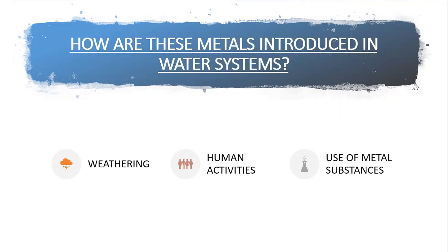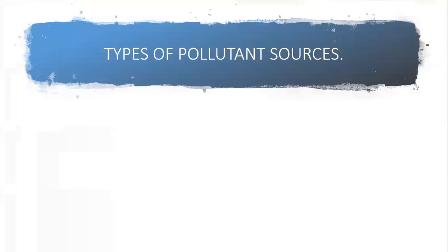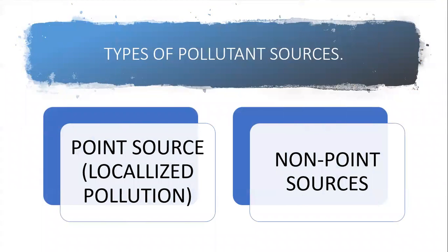These examples are essentially categorized into two categories of pollutant sources. Firstly, point source or localized pollution, whereby the source of pollution is identifiable, for example, weathering or volcanic activities. Secondly, non-point source, whereby the sources of pollution are dispersed and difficult to identify, for example, fuel combustion and street runoff.